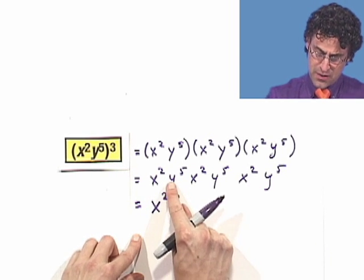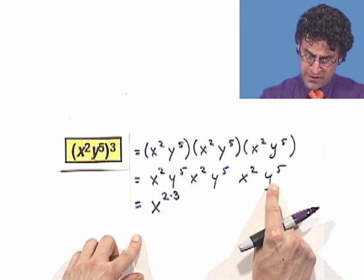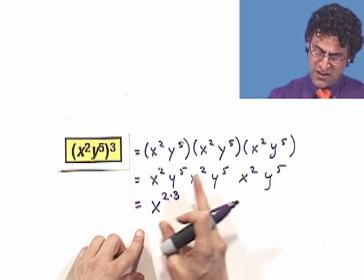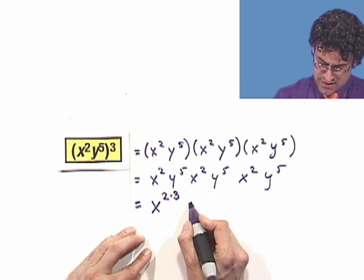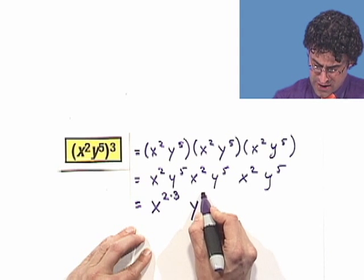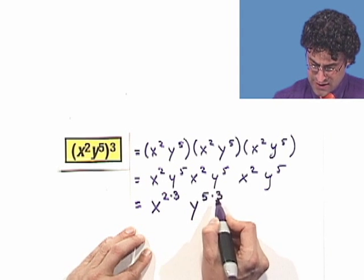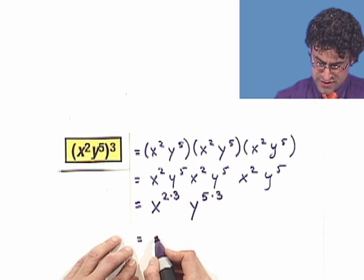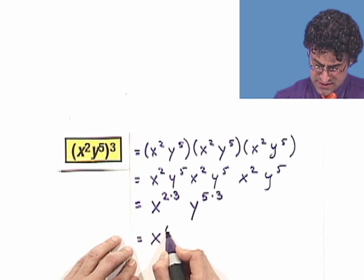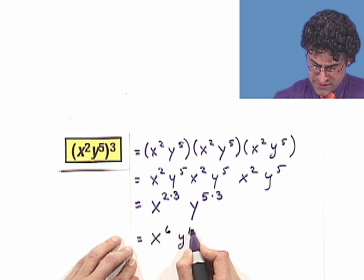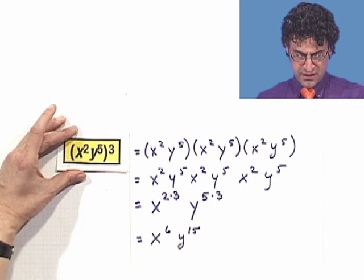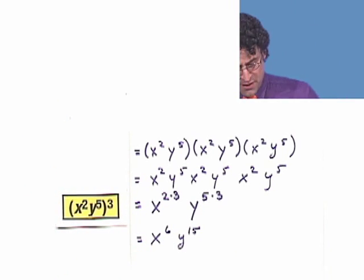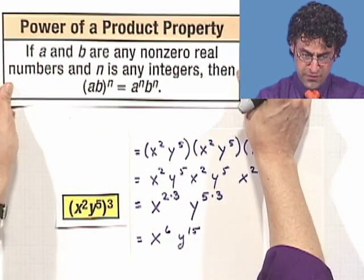What about the y's? I've got y to the fifth times y to the fifth times y to the fifth. I'm multiplying and we have the same base, so we add. I have five plus five plus five — there are three fives — so I see y to the five times three. Check it out: this equals x to the sixth, y to the fifteenth. But that's not what's most important; the thing I want us to look at is this fact right here, which inspires the following very cool fact.